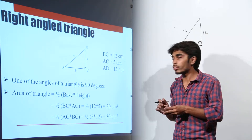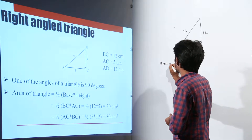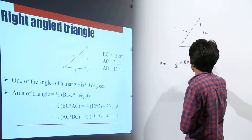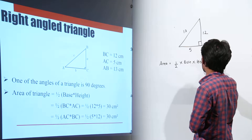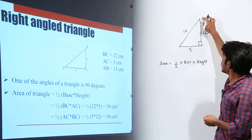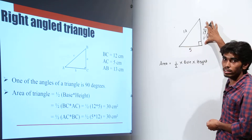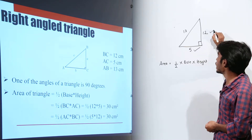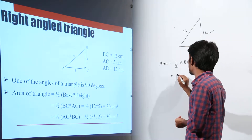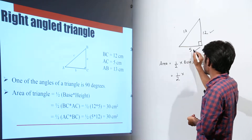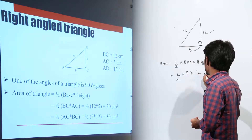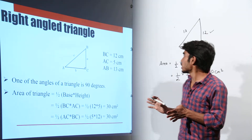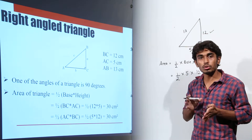To find the area of a triangle, the formula is: area equals half into base into height. In a right angle triangle, because this length is perpendicular to the base, we consider it as the height. So 5 is the base and 12 is the height. Substituting the values, area equals half into 5 into 12, which gives us 30 centimeter square.